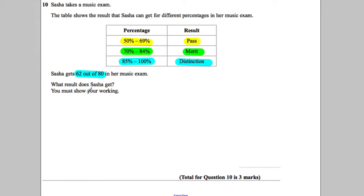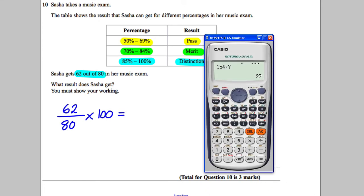To work out this as a percentage, what we need to calculate is she got 62 out of 80. And if we multiply that by 100, it will tell me what percentage she gets. So get your calculator out.